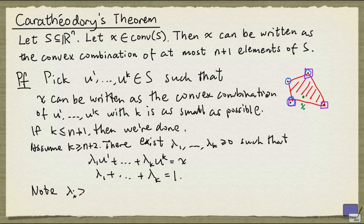Notice that λᵢ must be positive for all i from 1 up to k. That's because if λⱼ is 0 for some j, then we don't really need uⱼ to form the convex combination that gives us x, and that will contradict the minimality of k here.